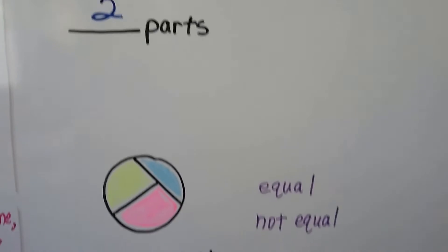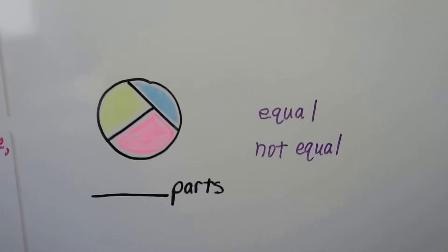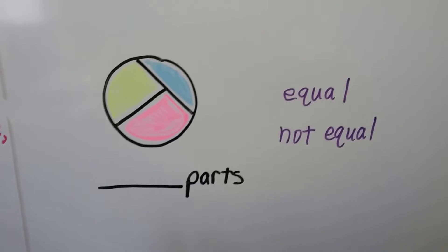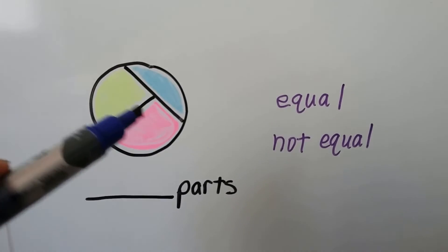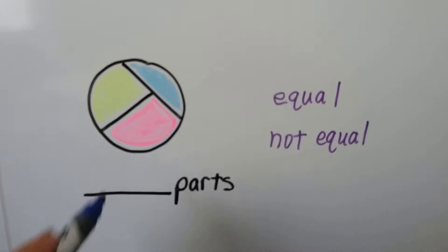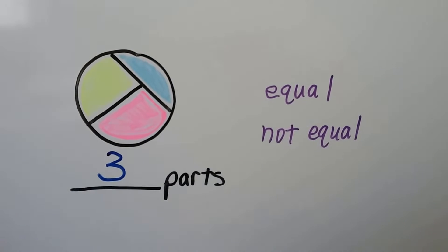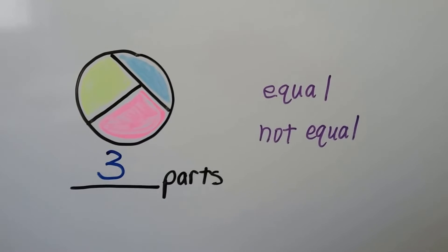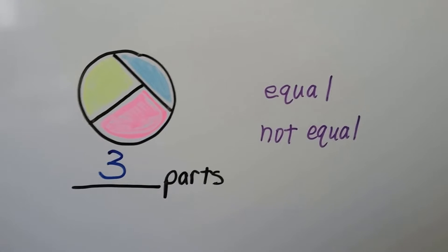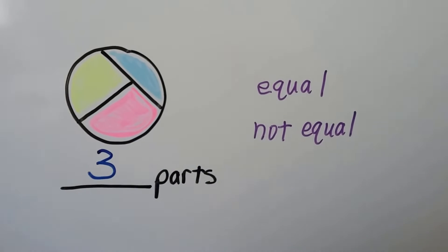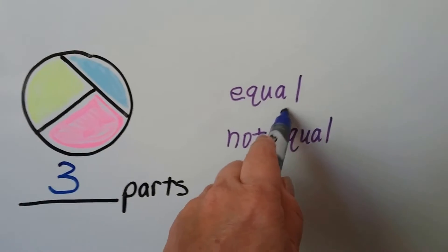How about this circle? Let's count the parts: one, two, three — there are three parts. Are they equal parts or not equal parts? Are they all the same size and shape? That blue one is really small, so they're not equal.